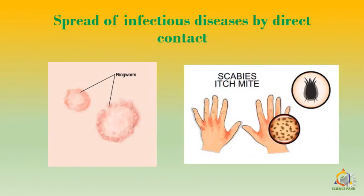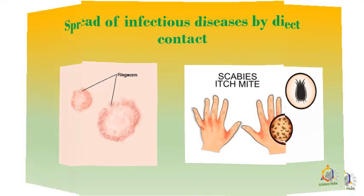Now, spread of infectious disease by direct contact. Ringworm and scabies directly affect the skin. If the germs are found on the skin and someone else comes in contact with the skin of the affected person, he will also get the disease. That is why direct contact is always a risk.